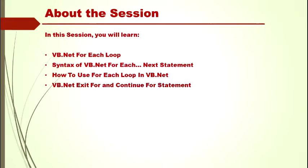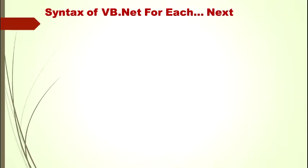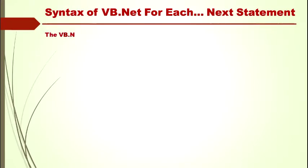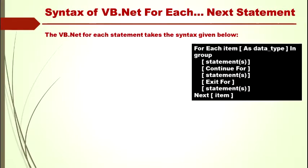Let me start with the first things. The syntax of VB.net For Each Next statement is as follows: For Each item [As datatype] In group, then any statements, Continue For, statements, Exit For, any statements, and then Next item. So this is the syntax.